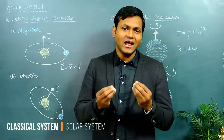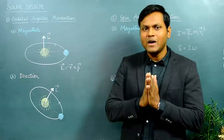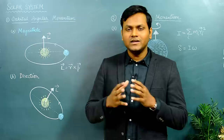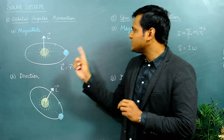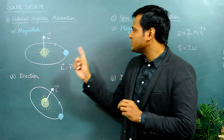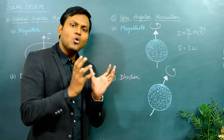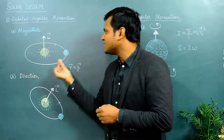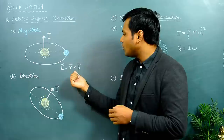Before talking about a quantum mechanical system, let's first look at a classical system, because it will be easier to track the different aspects of angular momentum there. I have taken the simple example of the solar system in which the Earth is revolving around the Sun. There are two kinds of angular momentum of Earth: the first is associated with the revolution of the Earth around the Sun, known as orbital angular momentum, and the second is associated with the rotation of the Earth on its own axis, known as spin angular momentum. For the orbital angular momentum, it is given by L equals R cross P.